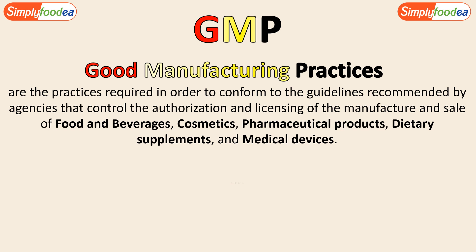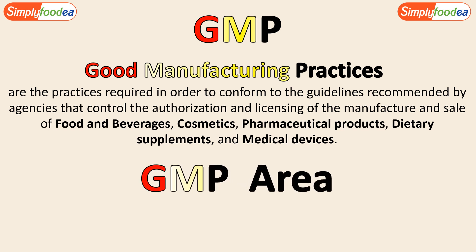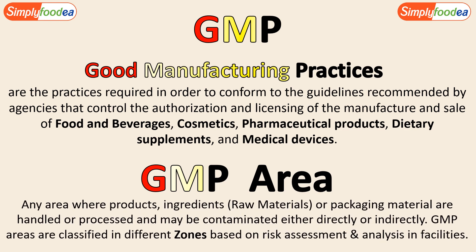So what are the GMP areas? In any food factory, the GMP areas are any area where products, ingredients, or packaging materials are handled or processed. These packaging materials, ingredients, raw materials, and products may be contaminated either directly or indirectly. The GMP areas are classified in different zones based on risk assessment in these facilities.